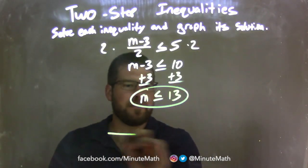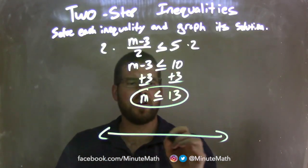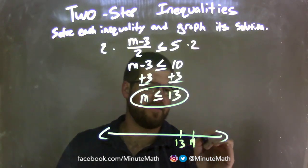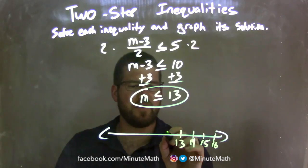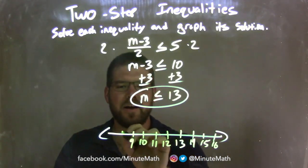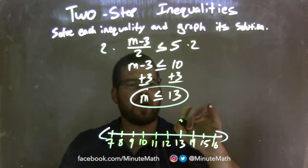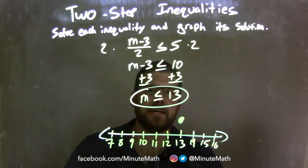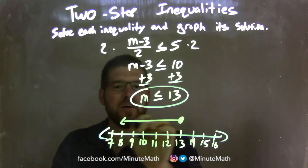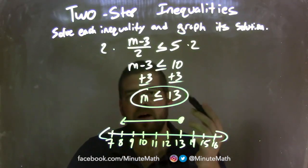Now we need to graph it. I put 13 right here, going by 1s: 14, 15, 16, and 12, 11, 10, 9, 8, 7. Since m can equal 13, I put a closed circle right there at 13. Then we shade to the left because m is less than 13. I have a graph that represents m is less than or equal to positive 13.